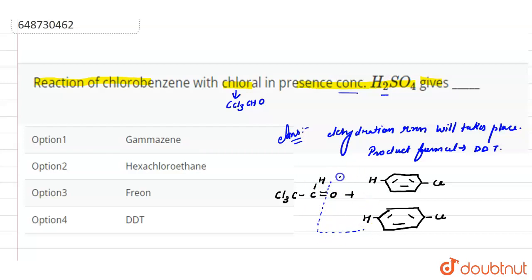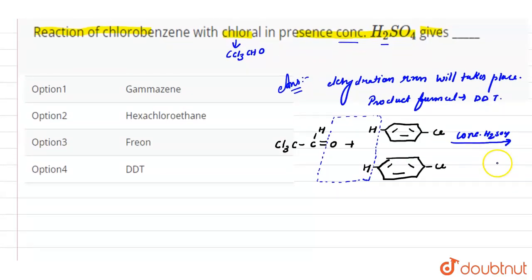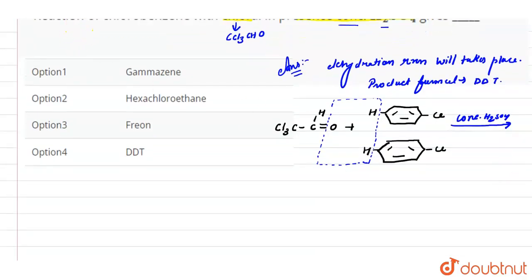The removal of water molecule, alright? And this reaction takes place in the presence of concentrated H2SO4, which is a dehydrating reagent. And the product we get here is CCl3C-CH, and at this position we have the chlorobenzene rings.